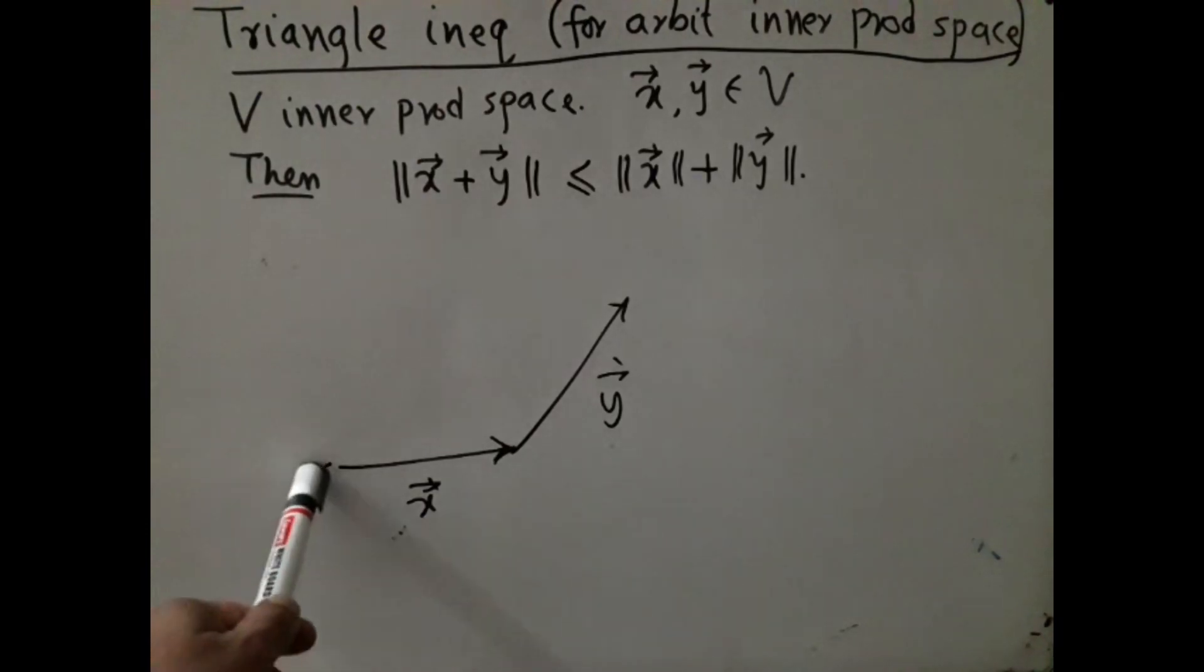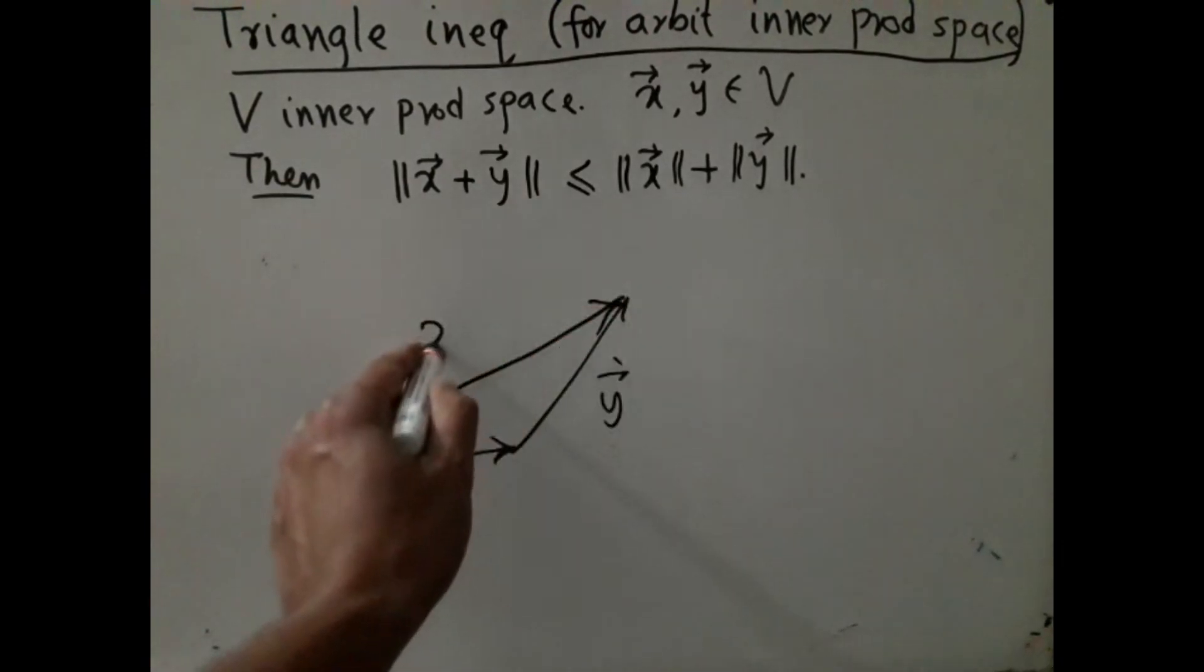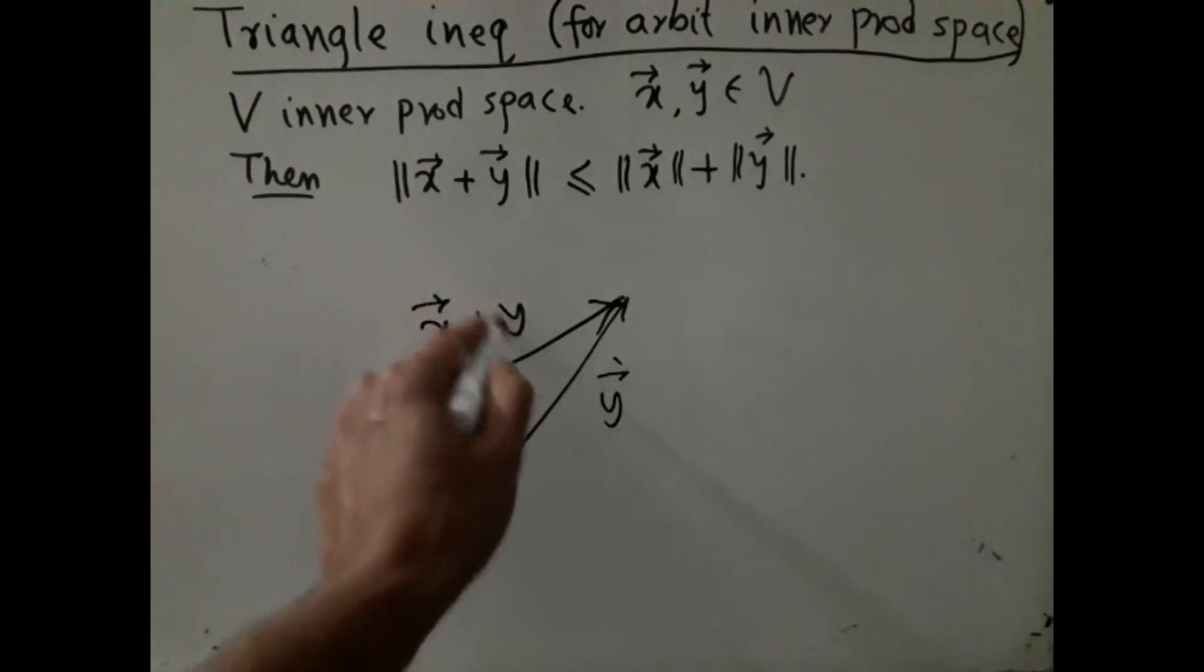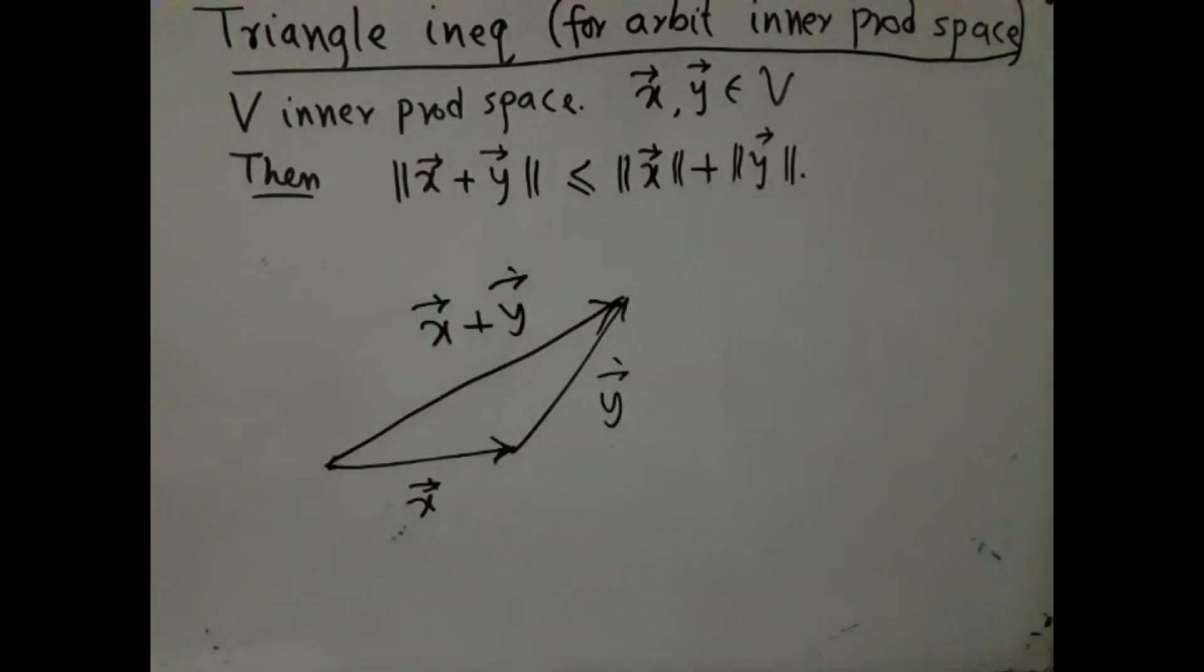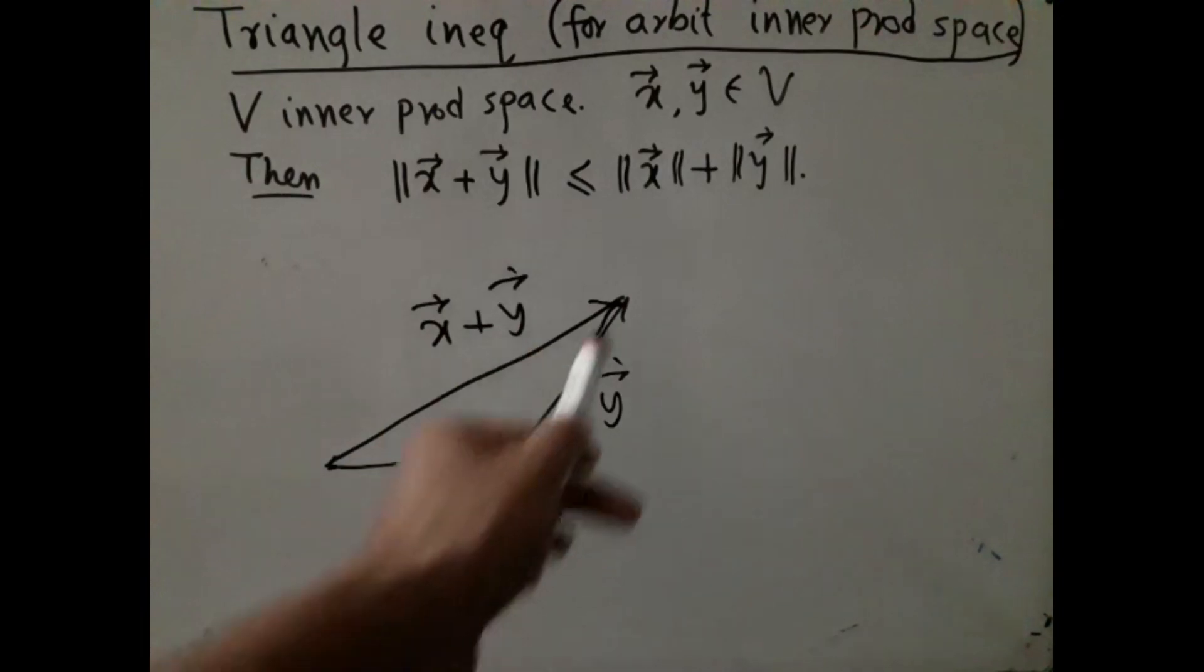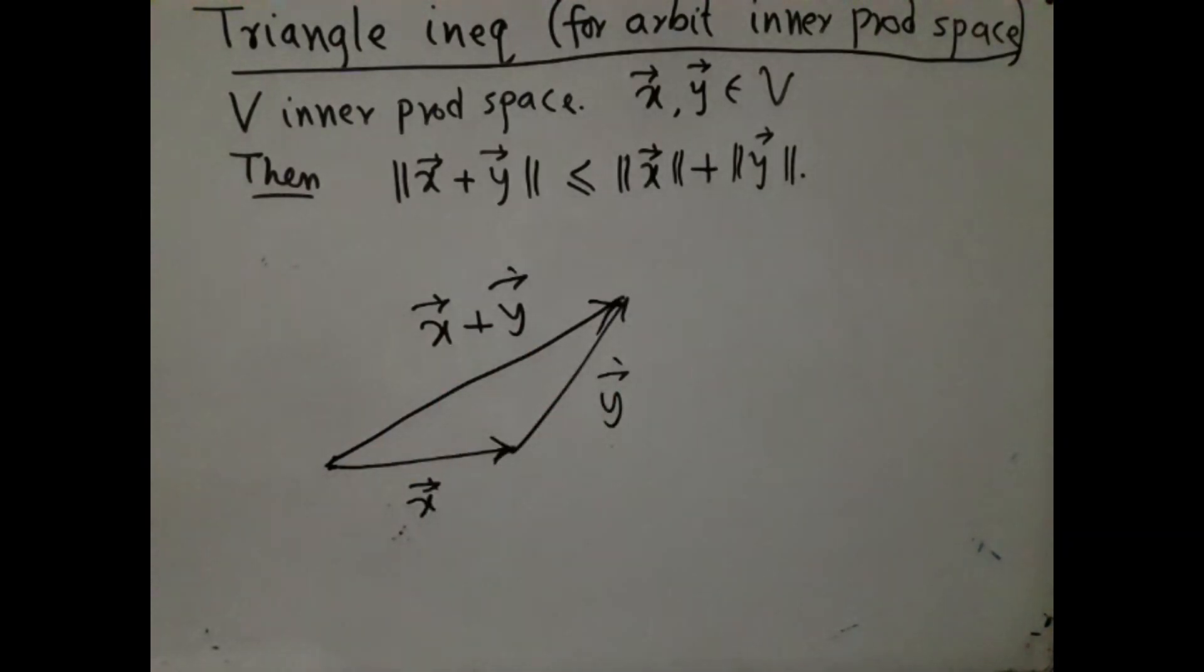We have already seen that if we take x as this vector, follow it up with another vector y, in that case from this end to that end, this vector is x + y. And in this case this inequality simply says that one side of this triangle, the length of one side, is less than or equal to the sum of the length of the other two sides, which is a standard fact for our R^2 or R^3 triangles. Triangle inequality says the same intuition works for any inner product space.